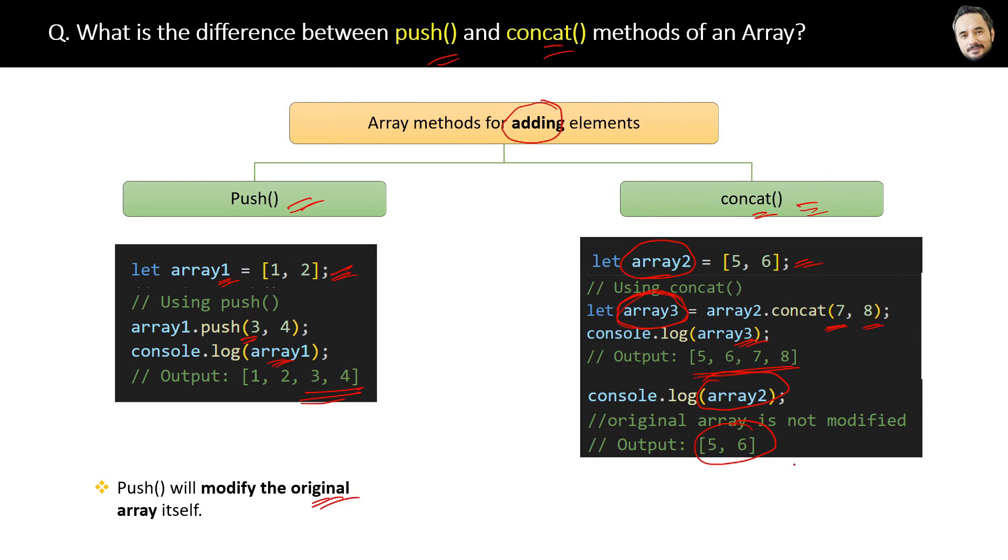And that is the difference. The point is that the concat method will create the new array and not modify the original array, whereas the push method will actually modify the original array. That is the difference.